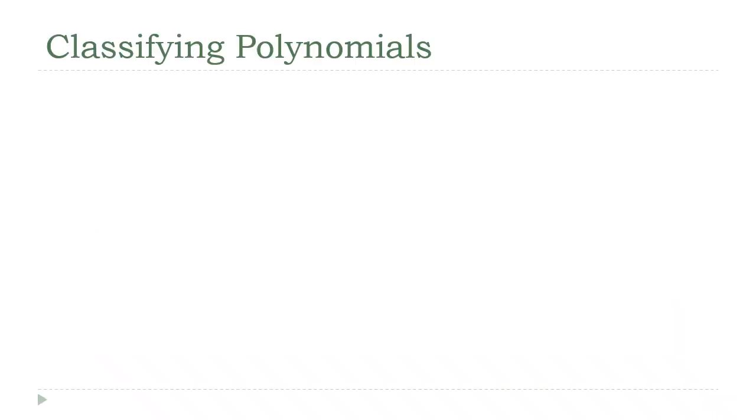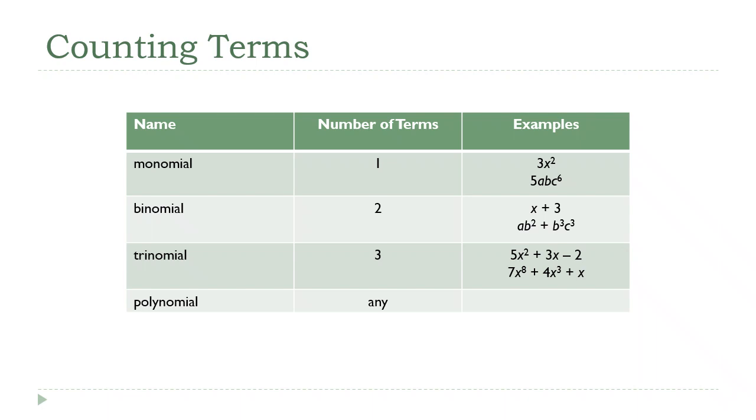One thing mathematicians in general just kind of love to do is classify things, and polynomials are no exception to that. There are two main ways that we classify polynomials, and in a sense both of them are classifying them based on their size.